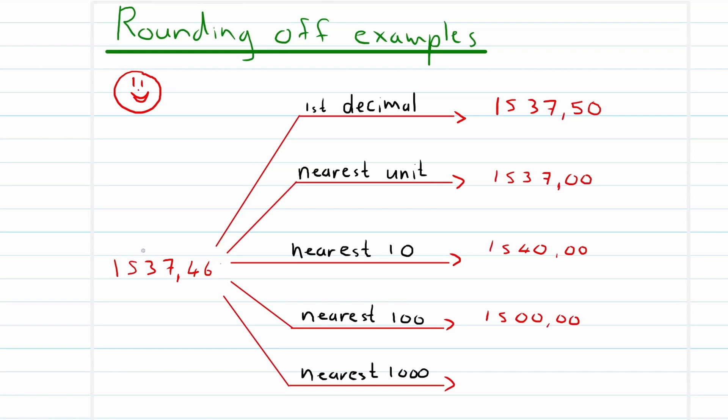You can see it's 5 and bigger, therefore it rounds the 1 up to 2. So this is rounded off to the nearest 1000. That's 2000. I believe this will help.